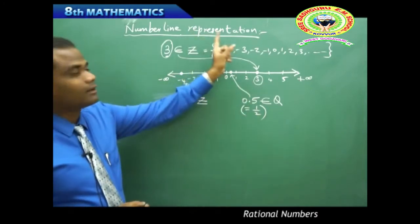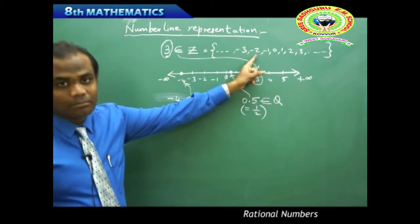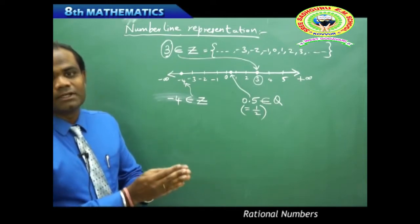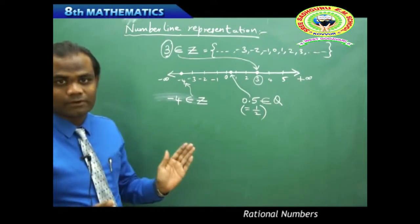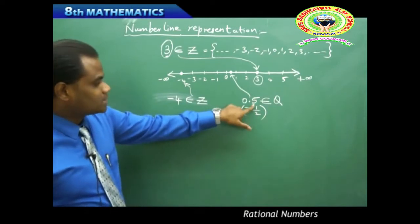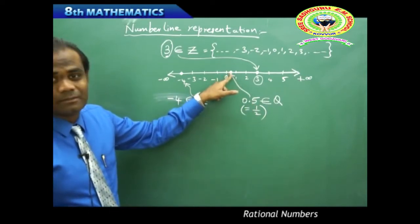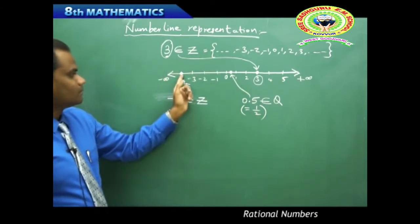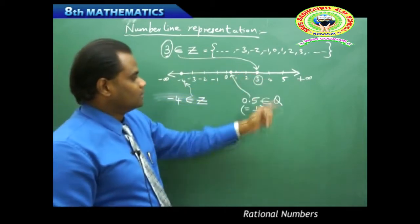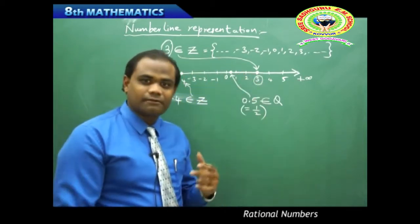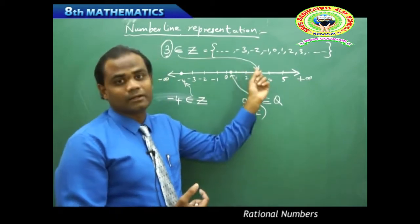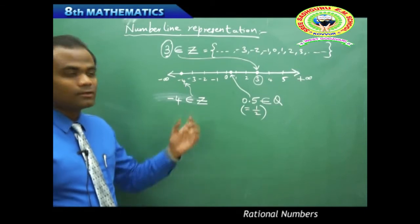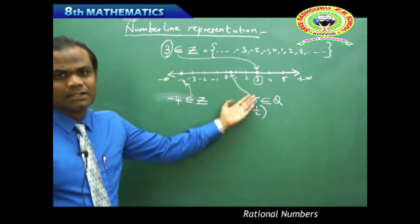This is what is called number line representation, and it is very important because sometimes we need to know in which region a particular value lies and between what values. So 0.5 lies between 0 and 1 exactly in the middle, minus 4 lies on the negative side of 0, and 3 is identified on the positive side. We can identify any number using the number line representation.